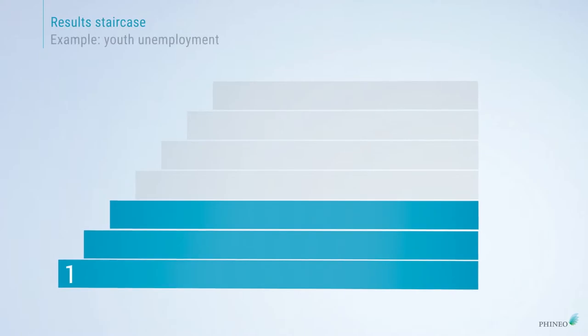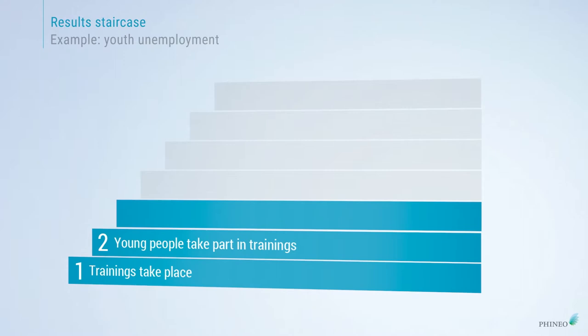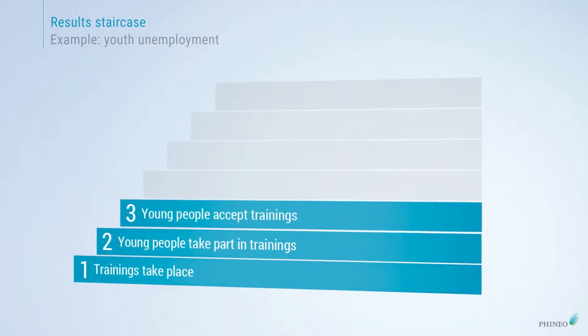So let's have a look at the results staircase using a concrete project example. Let's say that your project offers application trainings for young people to get them apprenticeship positions. What needs to happen? First of all, your trainings need to take place, and the young people need to take part in the trainings — they need to accept them and enjoy them.